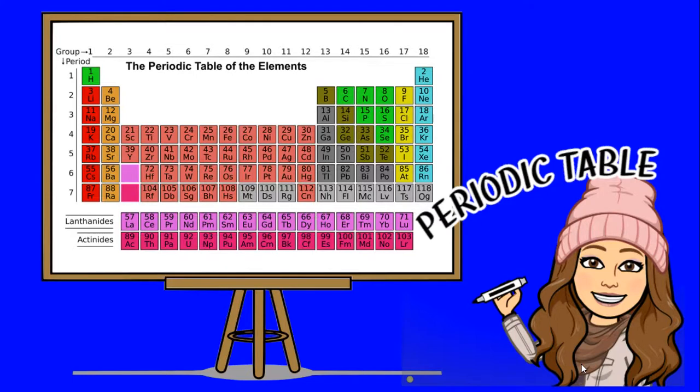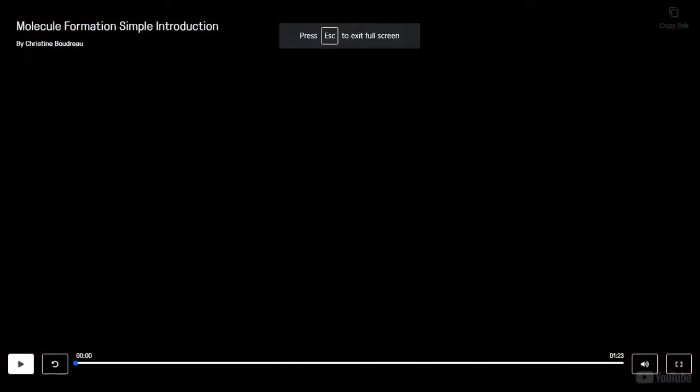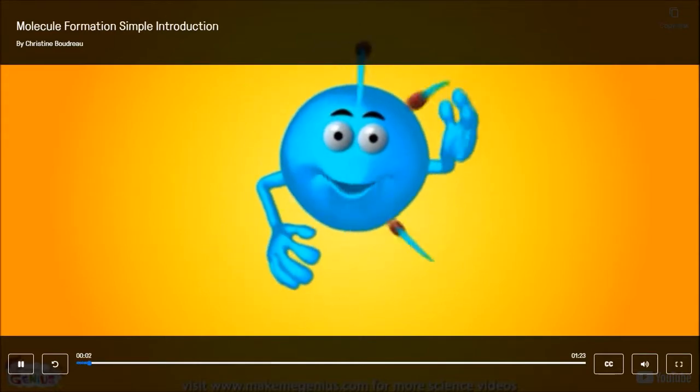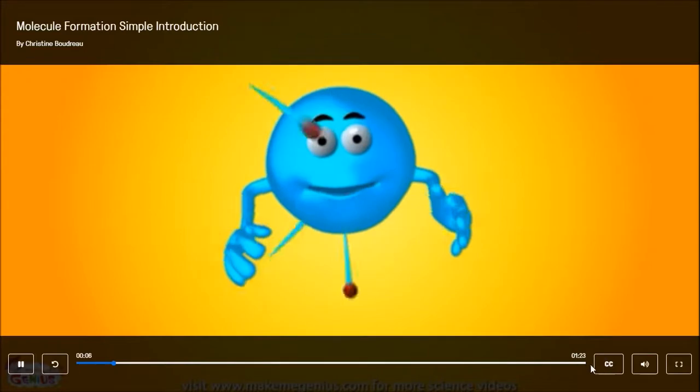We will discuss this further in our lesson on the periodic table. Now let's move on to molecules. A molecule is a group of two or more atoms held together by chemical bonds. Now let me explain how atoms bond together to form a molecule. It's just like letters getting together to form a word.